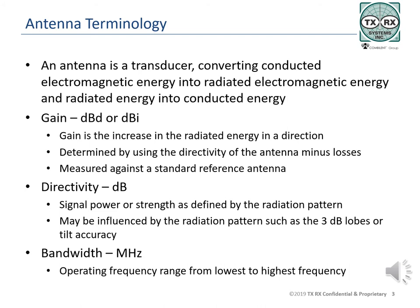Bandwidth is the frequency range of an antenna used for specifications from the lower frequency to the upper frequency. Antennas always operate outside their specified bandwidth, but with lower output. Antenna specifications have used VSWR bandwidth at 1.5 VSWR, but are now specifying bandwidth at -14 dB return loss, which is the same measurement but using different units.